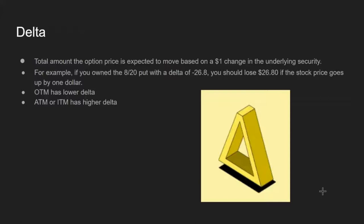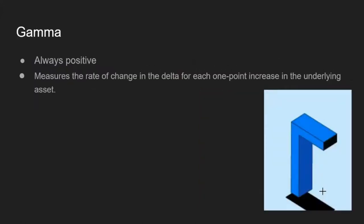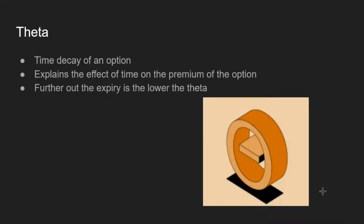The next options Greek is Gamma — not necessarily too important. It's a way to see the future of what the Delta could be. Gamma is always positive and measures the rate of change in Delta for each one-point increase in the underlying asset. It's kind of like a forecast for Delta, not necessarily anything too important to worry about.